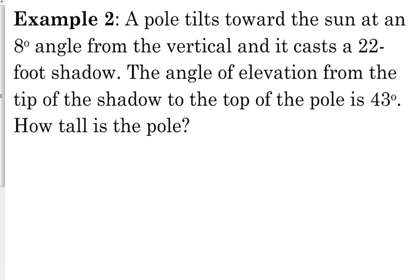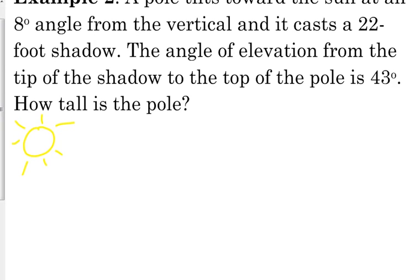Here's a question, and it says a pole tilts towards the sun at an 8 degree angle from the vertical. So let's say we've got our Mr. Sun right up here. I can draw a sun. We have a pole. I'm not artistic. It is tilting 8 degrees from the vertical. Now, I'm going to exaggerate this because it's a little bit more than 8 degrees. But here's our pole. Here's vertical. It is 8 degrees from vertical, vertical making a right angle with the ground.